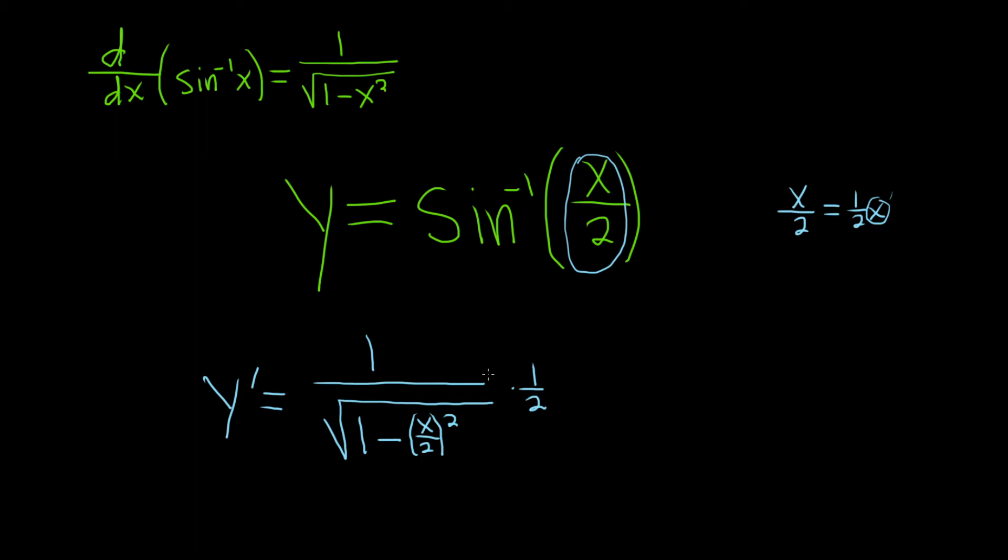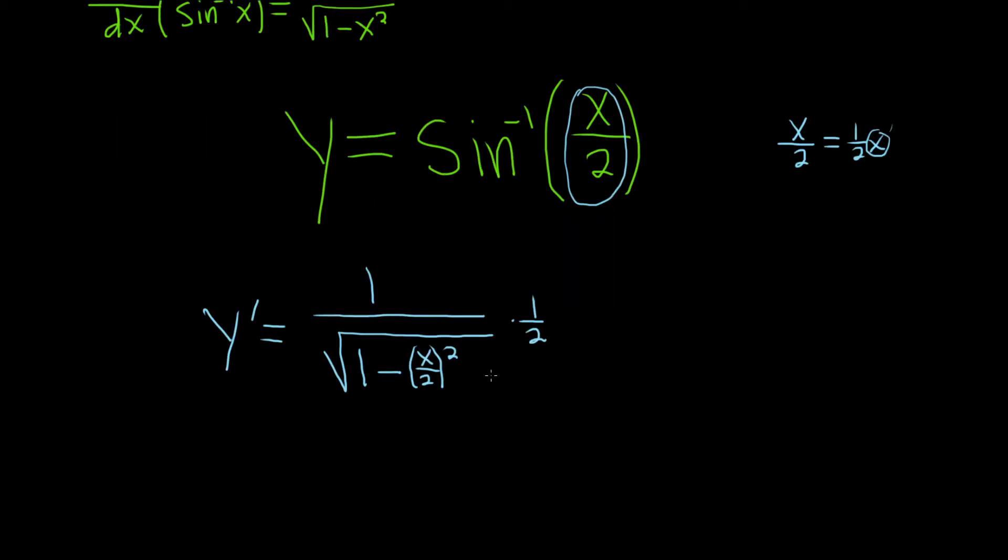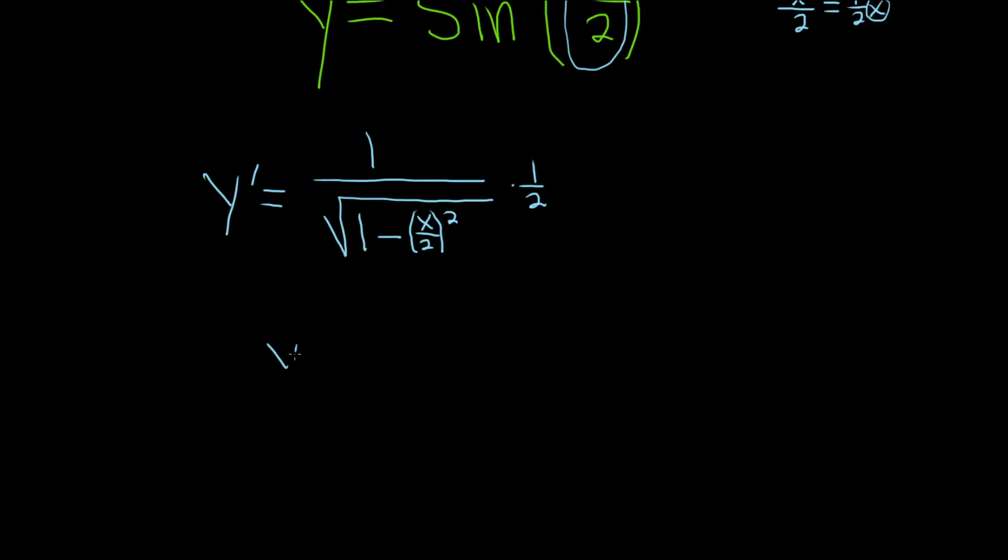We could probably simplify our answer quite a bit. Let's go ahead and do that. This is y prime equals—I'm going to put the 1 half in the front here. Then we have 1 over the square root of, and x over 2 squared is really x squared over 4, so let's write this as 1 minus x squared over 4.